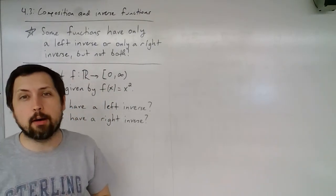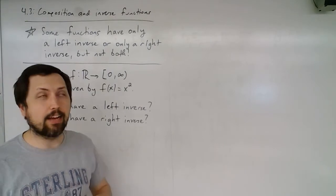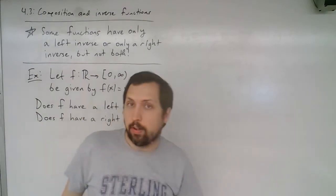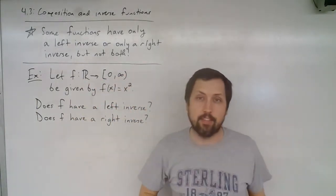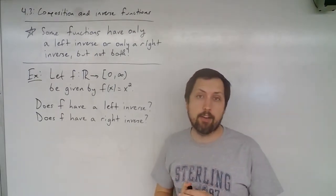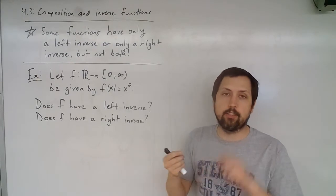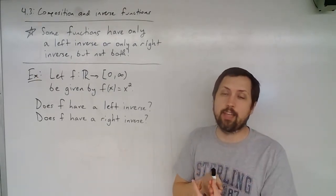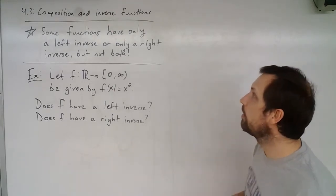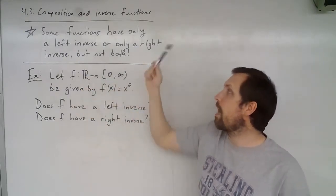Let's take a look at left and right inverses. This is an important fact: some functions have only a left inverse or only a right inverse, but not both. Remember, we had left inverses, right inverses, and then the full inverse when a function has both. If something is a left inverse but not a right inverse, it is not the inverse function.